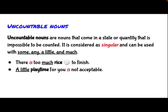The second form of nouns is uncountable nouns. Uncountable nouns are nouns that come in a state or quantity that is impossible to be counted. It is considered as singular, and can be used with some, any, a little, and much. For example, there is too much rice to finish. A little playtime for you is not acceptable. The uncountable nouns are bolded, which are rice and playtime. The word 'is' shows that they are uncountable and considered as singular. The words that go with them also show that rice and playtime are uncountable nouns.